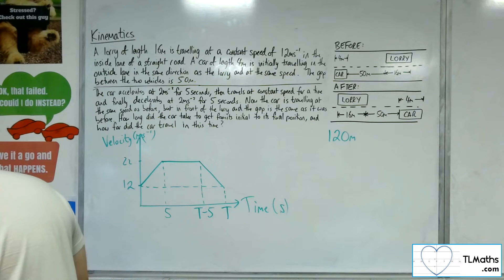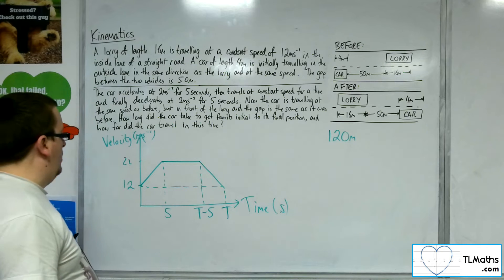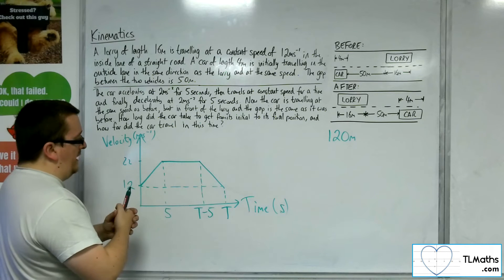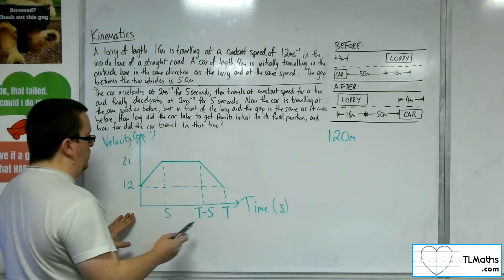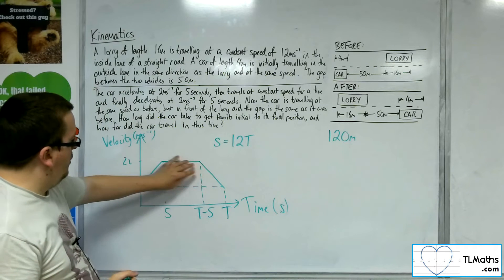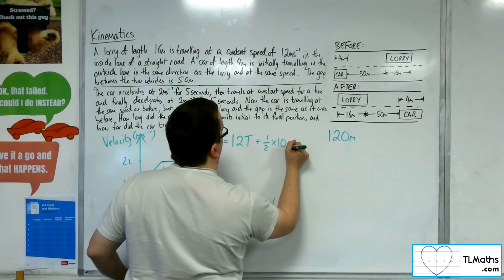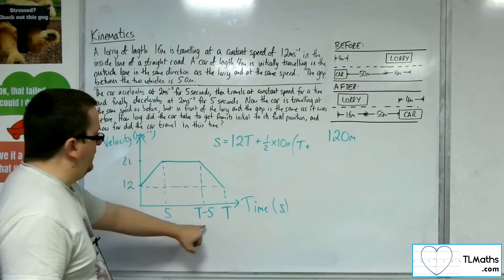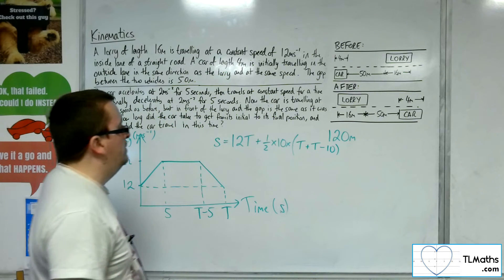Next thing we're going to do is have a look at the area underneath this graph, because that will tell us the displacement. I can look at this as a rectangle plus a trapezium. The rectangle at the bottom will be T times 12, so the displacement will be 12 times T. Then I've got the area of that trapezium. The perpendicular height is 10. So it's one half times H times that distance plus that distance. That distance is T. Now what is that distance? It's T take away 5, take away 5. So T take 10.